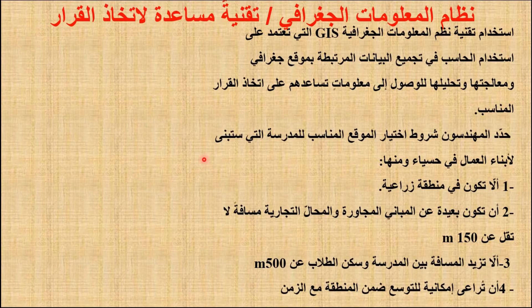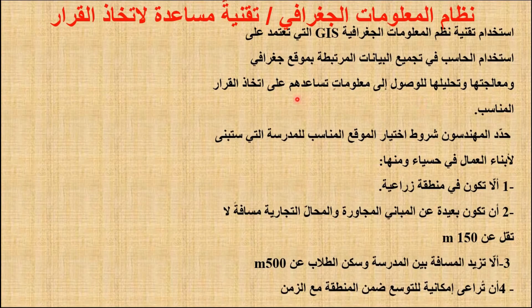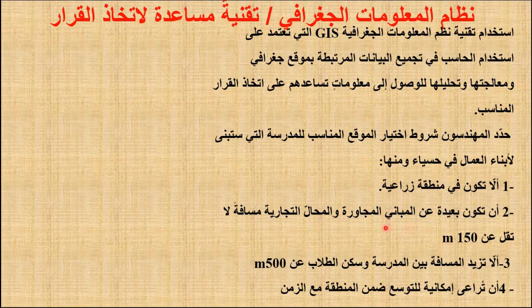نظام المعلومات الجغرافي تقنية مساعدة لاتخاذ القرار، أي أنها أحد أهم الأدوات التي تعطيني خيارات وتساعدني على اتخاذ القرار، ومن المهم أن أعلم أنها لا تتخذ القرار عني. استخدام تقنية GIS يعتمد على الحاسب في تجميع البيانات المرتبطة بموقع جغرافي ومعالجتها وتحليلها للوصول إلى معلومات تساعد على اتخاذ قرار مناسب. حدد المهندسون شروط اختيار الموقع المناسب لبناء مدرسة لأبناء العمال في مدينة حسيا: ألا تكون في منطقة زراعية، وأن تكون بعيدة عن المباني المجاورة والمحال التجارية مسافة لا تقل عن 105 أمتار.